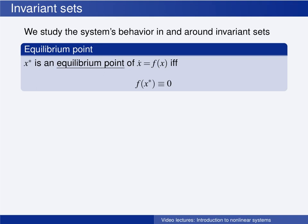One type of invariant set that will be central in this course is the equilibrium point. We say that the state x — denoted x asterisk to show that it is one particular value of the state — is an equilibrium point of the nonlinear time-invariant system ẋ = f(x) if and only if f evaluated at this point is identically zero. In other words, if the system starts in the state x asterisk, it will remain in this state for all future time, because f(x asterisk) being zero means the time derivative of x equals zero, so the state does not change.